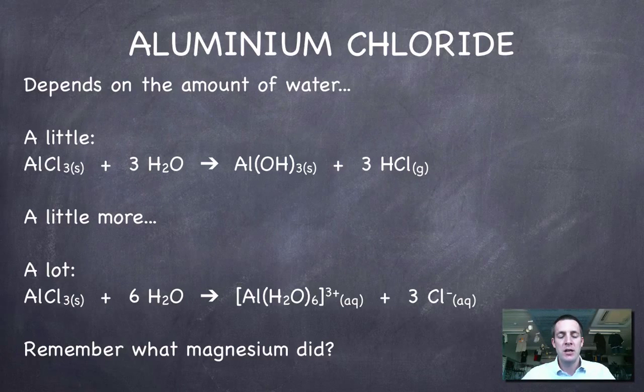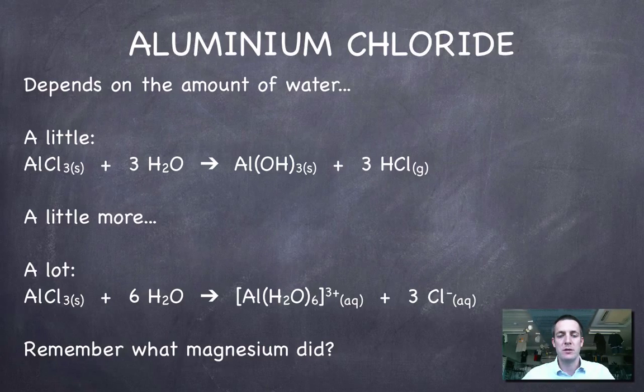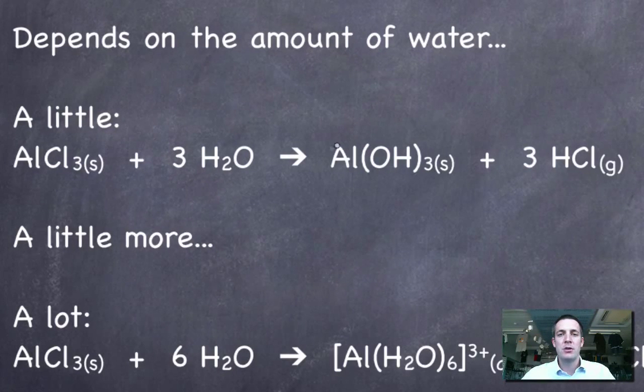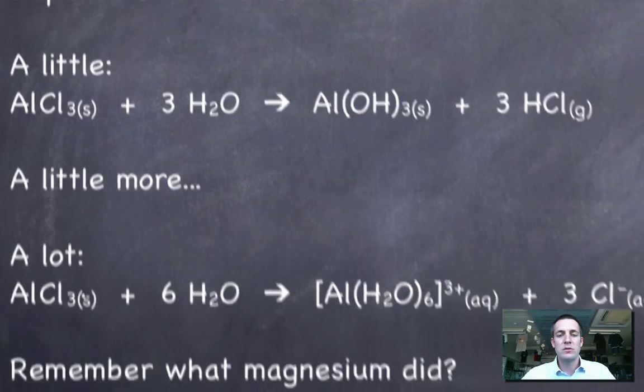We've got two different equations here depending on how much water we add to aluminium chloride. If you add just a small amount of water, maybe a few drops of water to some aluminium chloride, you're going to make aluminium hydroxide and you get this kind of spluttering as this hydrogen chloride gas forms. You can imagine if you use a little bit more water, this hydrogen chloride gas would dissolve in water and produce hydrochloric acid, so we'd expect to see quite an acidic solution.